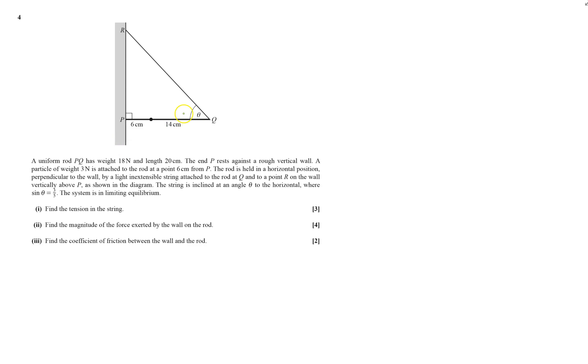A uniform rod PQ has weight 18 newtons that comes straight from the middle. It rests against a vertical rough wall, so this will have friction going up here and normal contact force going there. A particle of weight 3 newtons is attached there.